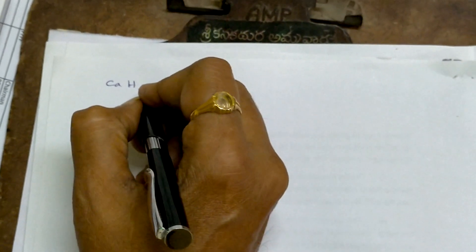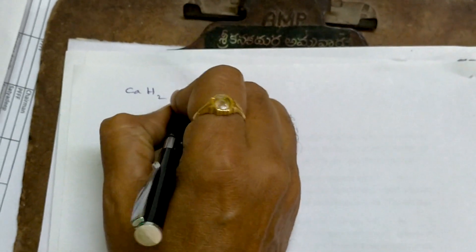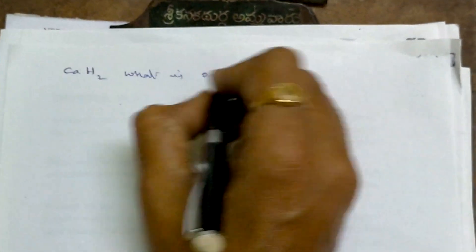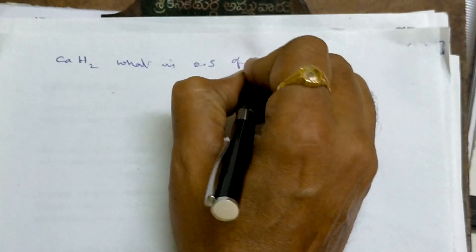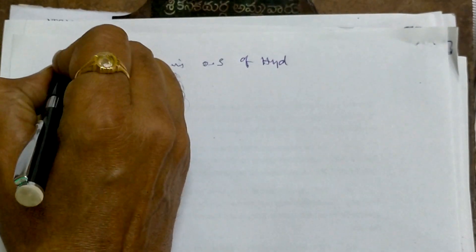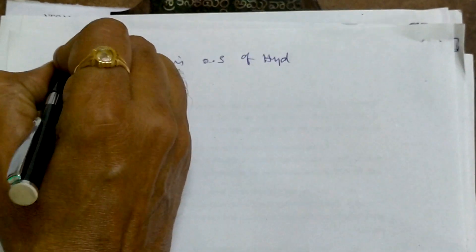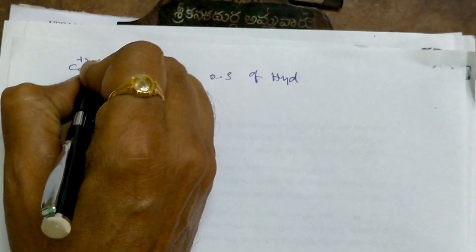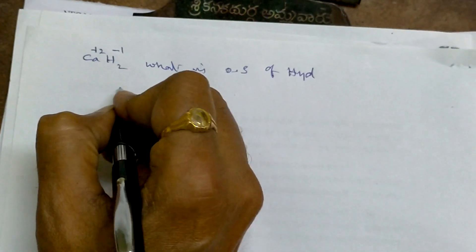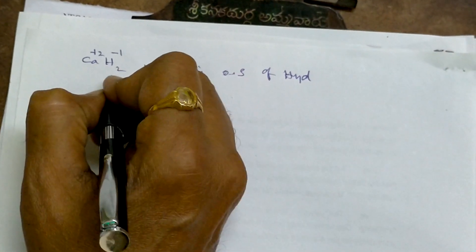First question: calcium hydride CaH₂ — what is the oxidation state of hydrogen? Calcium is always plus 2, so hydrogen is minus 1. The answer is hydrogen is minus 1.